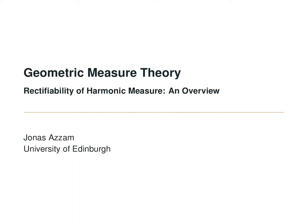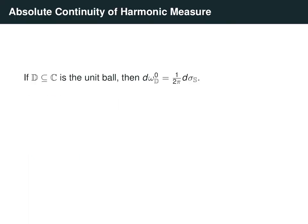In this video, we give an overview of the results concerning the connections between the absolute continuity properties of harmonic measure and the rectifiable structure of harmonic measure. We can in some instances write down explicitly what the harmonic measure for some domain is. For example, if we have the unit disk in the complex plane, then the harmonic measure with pole at zero is just a multiple of Hausdorff measure restricted to the boundary, or a multiple of surface measure.